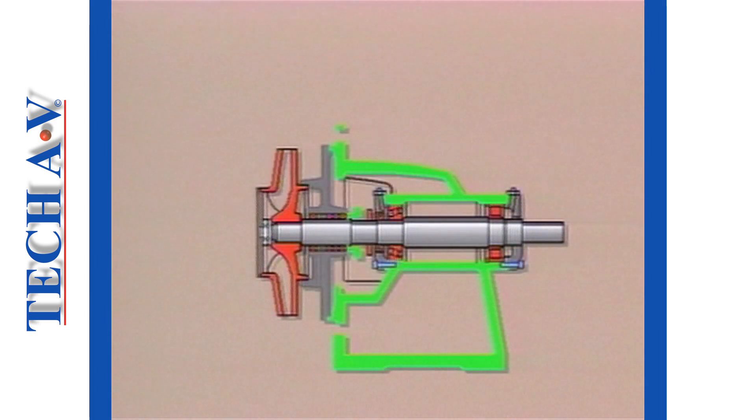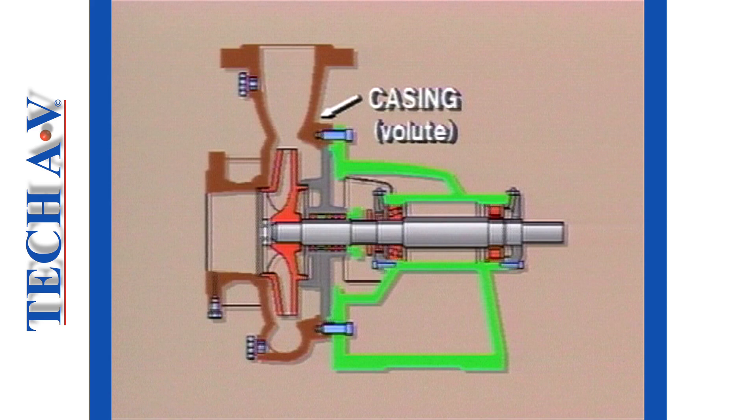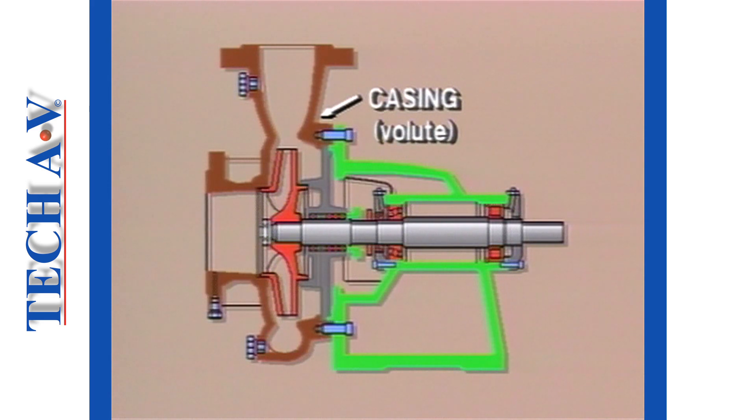Behind the impeller is a cover plate called the gland cover, which is there to provide a water-tight seal. The impeller is surrounded or encased by the casing. On this particular pump, it is known as a volute casing because of its particular design.